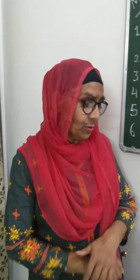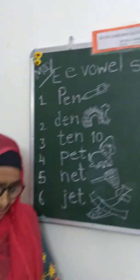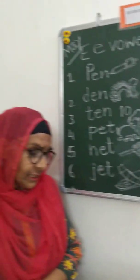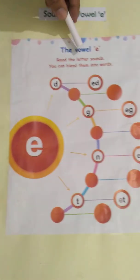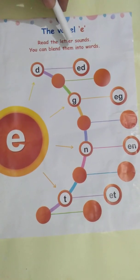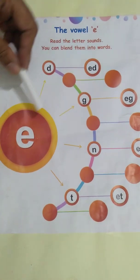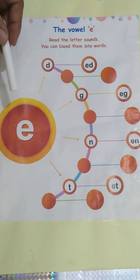Already we have done the sound of vowel A. Now first let us do reading of two letters. Read the letter sounds — you can blend them into words. Here is vowel E and here are other consonants. Now we will blend them.